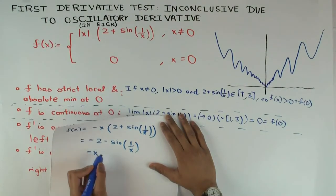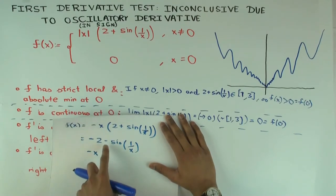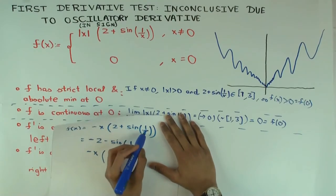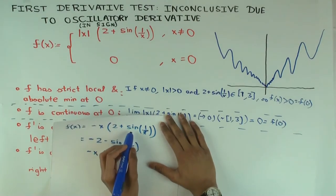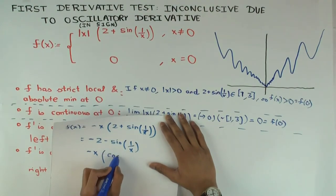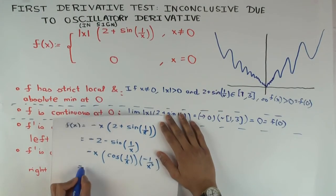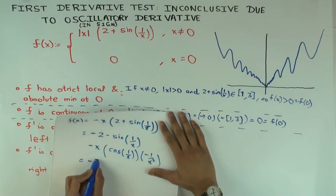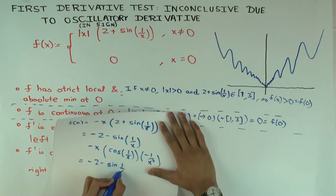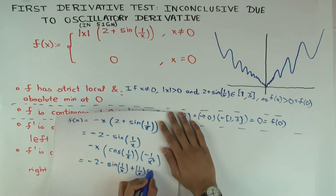Using the product rule, we have minus x times the derivative of (2 plus sin(1/x)). The derivative of 2 is 0, and the derivative of sin(1/x) is cosine(1/x) times minus 1/x². The minus signs cancel, giving f'(x) equals minus 2 minus sin(1/x) plus (1/x) cosine(1/x).